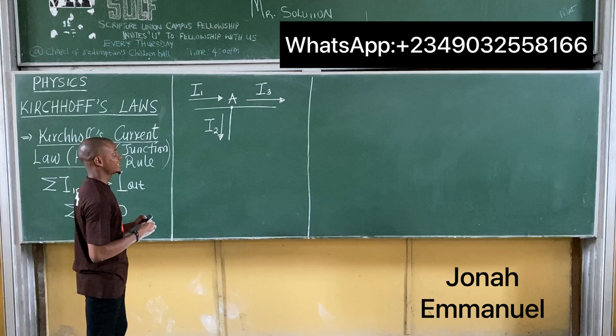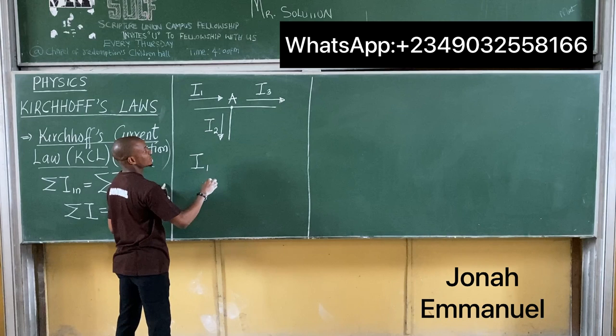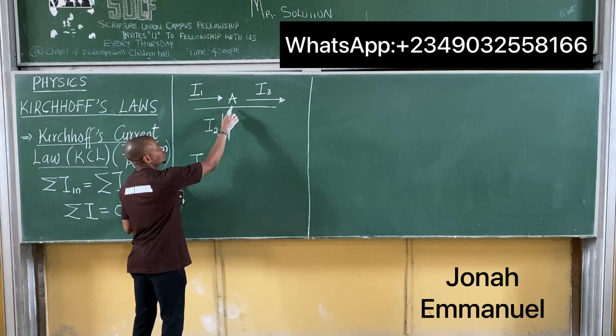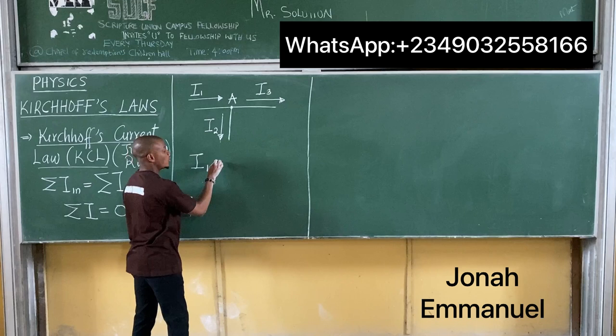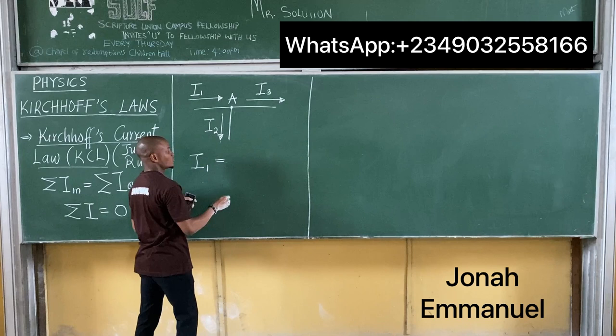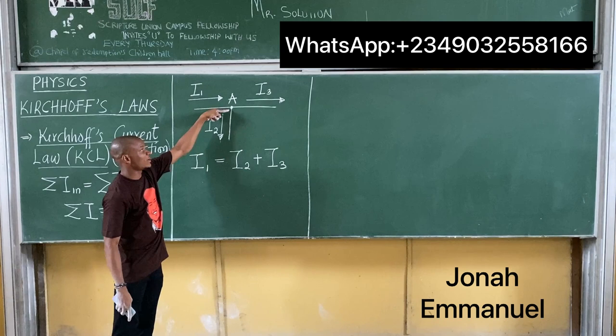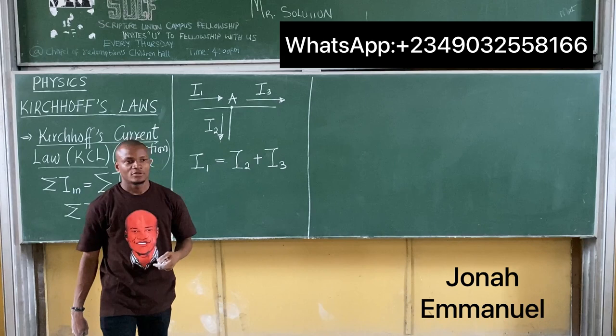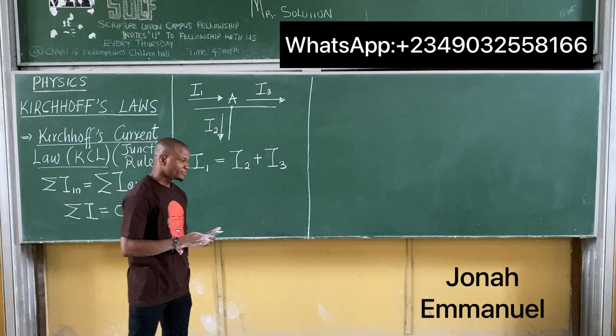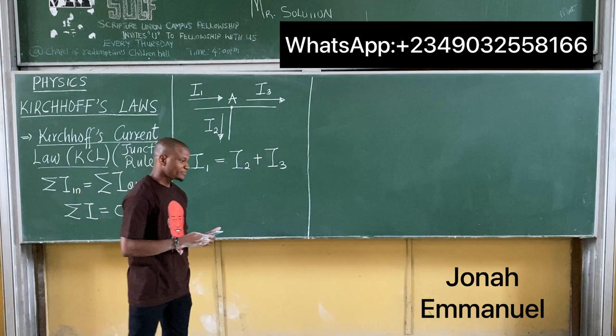From Kirchhoff's Current Law, KCL, the sum of current coming into this junction is just I1, because I2 and I3 are leaving the junction. Hence, I1 is equal to I2 plus I3. So I1 equals the sum of currents leaving the junction — that's the current equation for this junction.